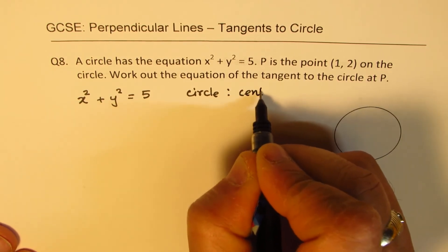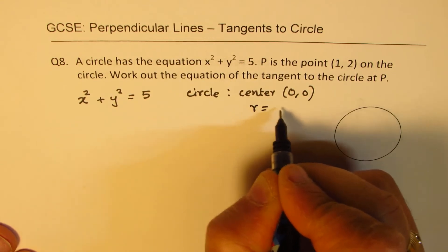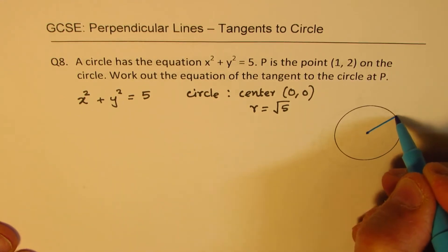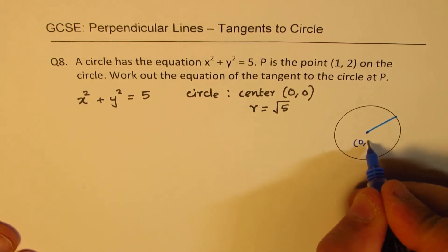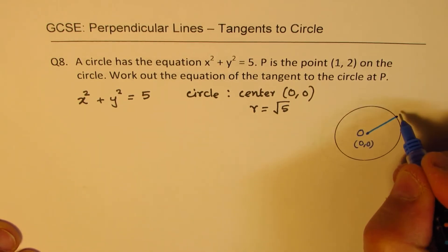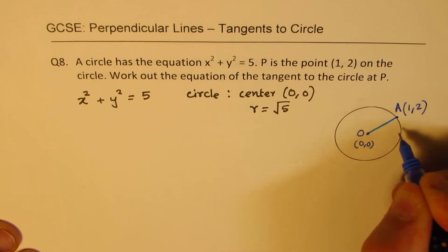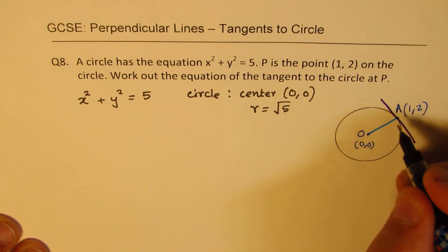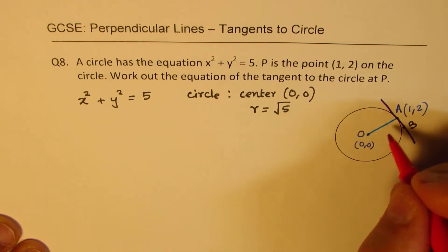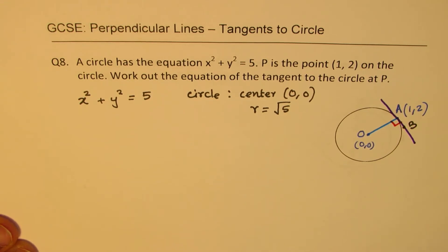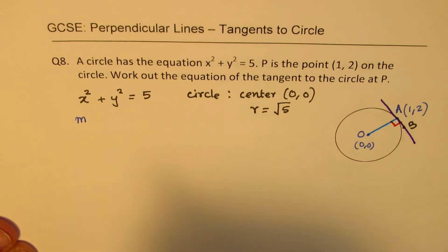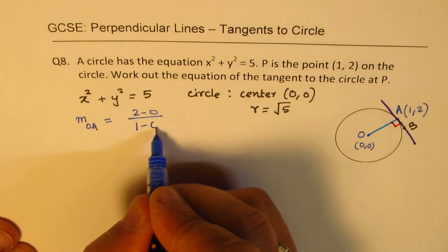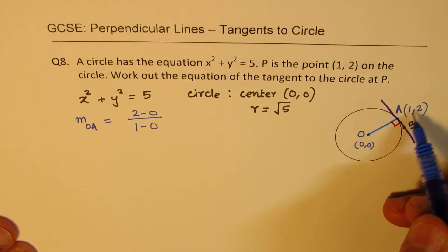The equation x² + y² = 5 represents a circle with center at the origin (0, 0) and radius √5. What we really need here is the center, which is (0, 0). We are given the point — let's call it A at (1, 2). This becomes exactly the same type of problem as before. The radius OA is perpendicular to the tangent at A. The slope of OA is (2 − 0)/(1 − 0) = 2/1 = 2.